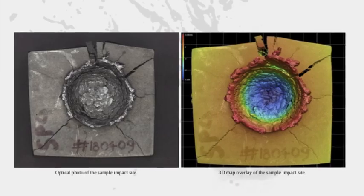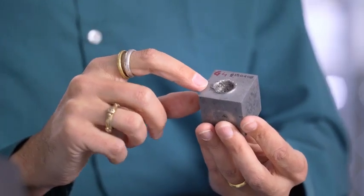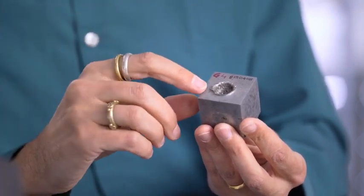So everything has been documented in great detail. Here we have a piece of the Gibeon meteorite. And what we see here is a crater that was produced as a result of one of our experiments.